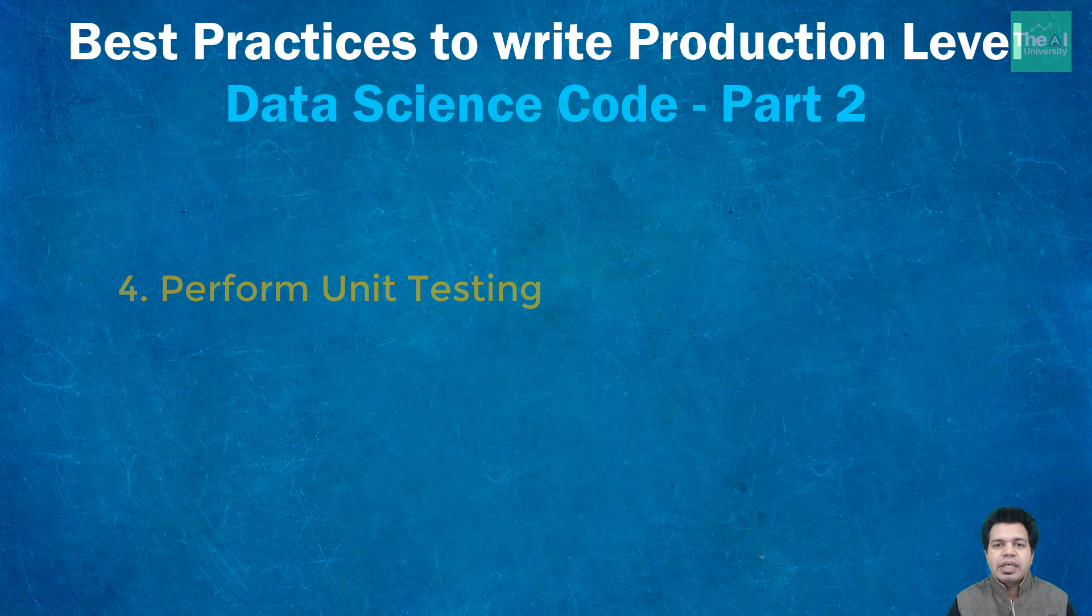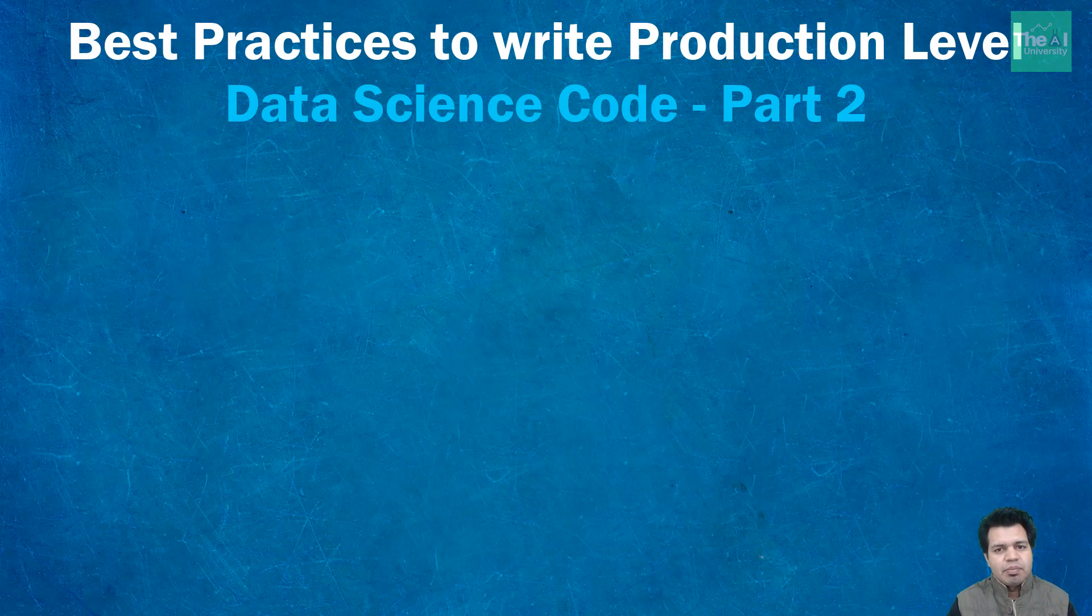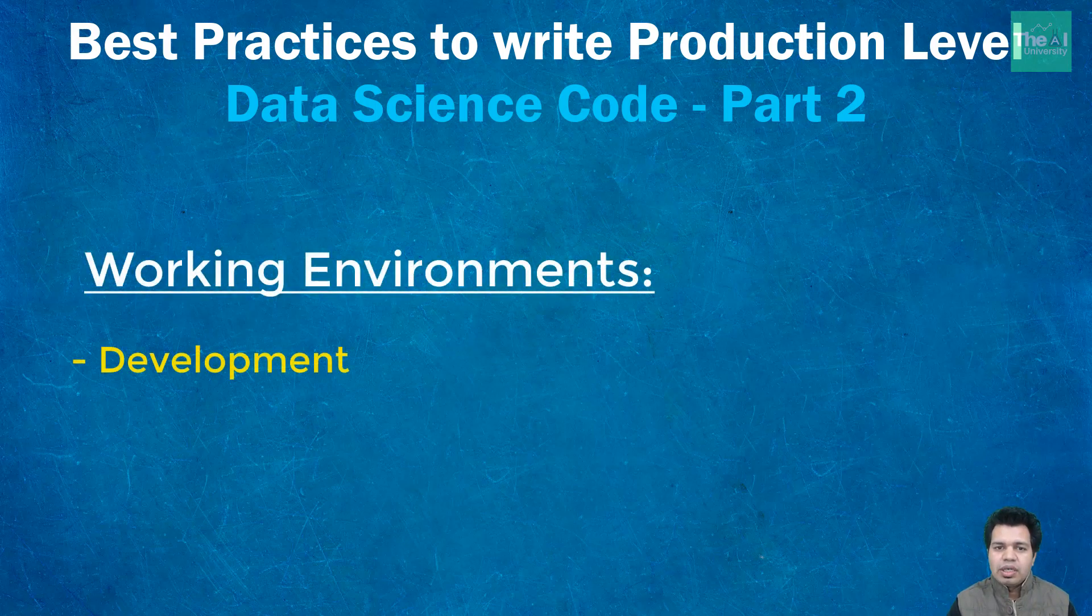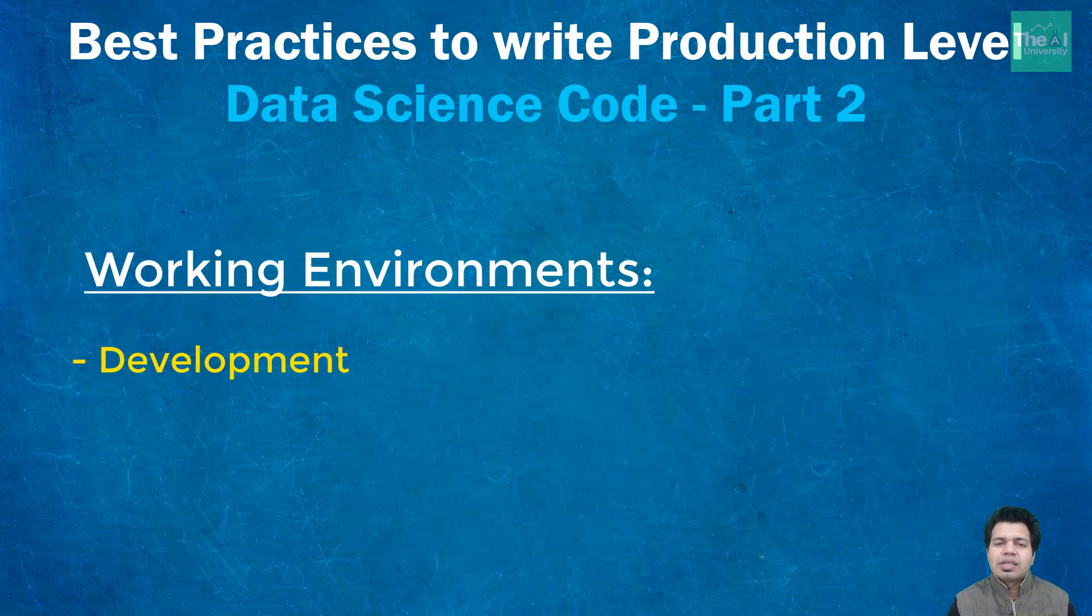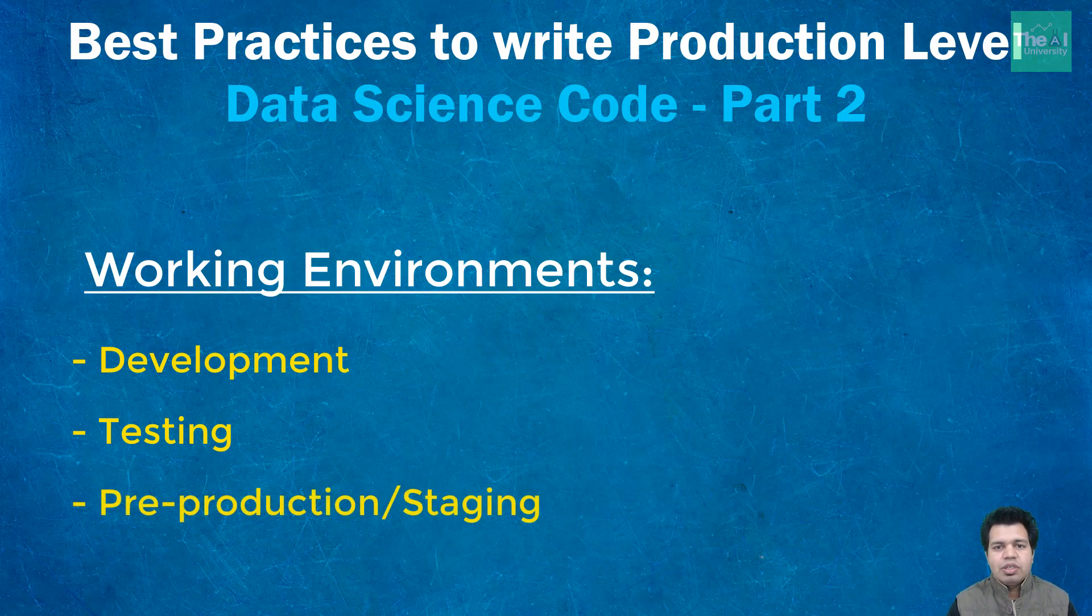Okay so companies create a separate environment before they move any code to production. These environments are development where developers write the code and perform unit testing. Then there is a testing environment where testers perform system testing, regression testing, integration testing as well as performance testing. Then they have a pre-production or staging environment which actually mimics the production environment and where we finally perform our final testing before moving the code to the final environment called production environment where the actual application runs in real life.